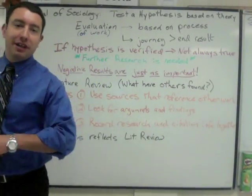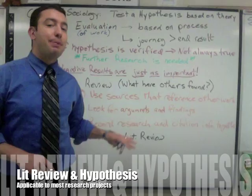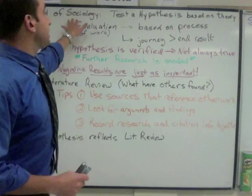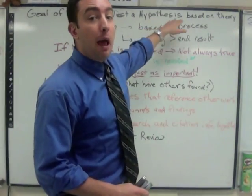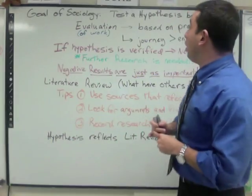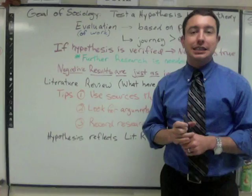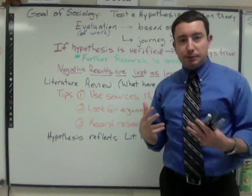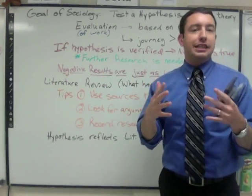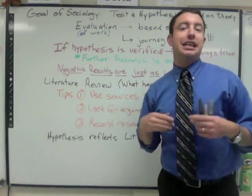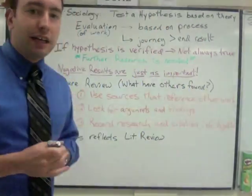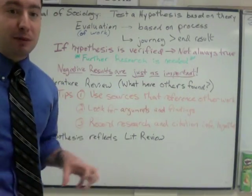Today we're going to be looking at how we can create a hypothesis based on a literature review. The goal of sociology is to test a hypothesis based on a theory. A theory is not just 'I think this, so it's true.' A theory is really based on scientists that do experiments, that test out hypotheses, and they collect these together and say this is true enough that we can say we have a theory that this is possibly true. So a theory is really based on other people's hypotheses.